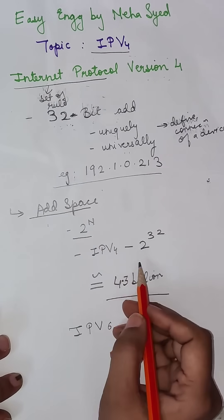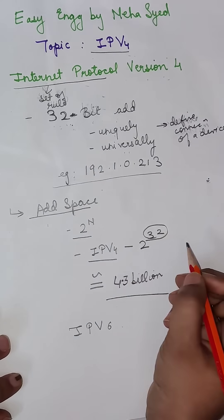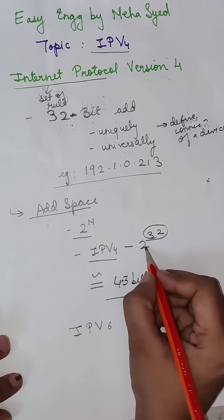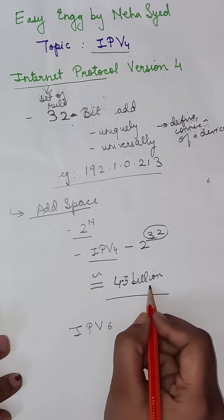Now for example, IPv4 has a 32-bit long address space, so it is going to have 2 raise to 32 address spaces, which is almost 4.3 billion address spaces.